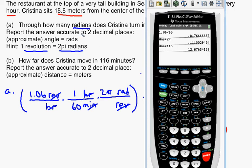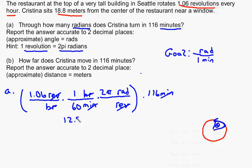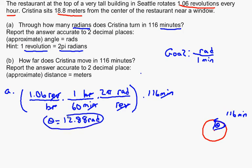Reporting to two decimal places as instructed, the answer is 12.88 radians — that's how far she traveled, and that's this theta here. The restaurant is rotating at almost one revolution per hour, and over 116 minutes she turns through an angle of 12.88 radians. This is an unintuitive unit to work with, but the advantage is in Part B we'll use a formula that involves theta and requires radians — so had we worked in degrees, we'd need to convert anyway.